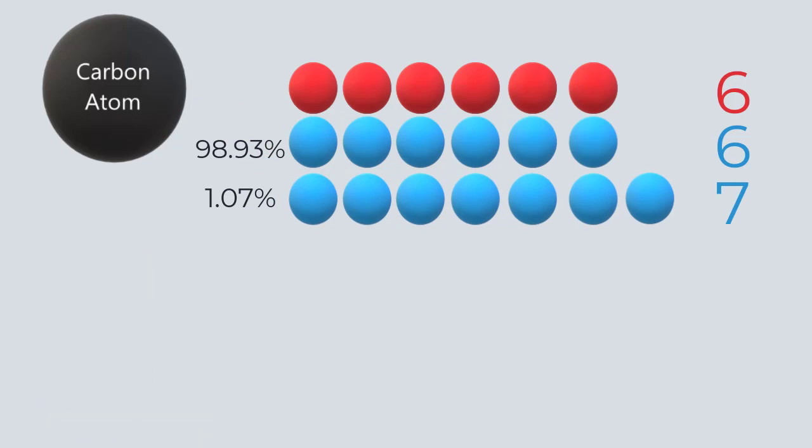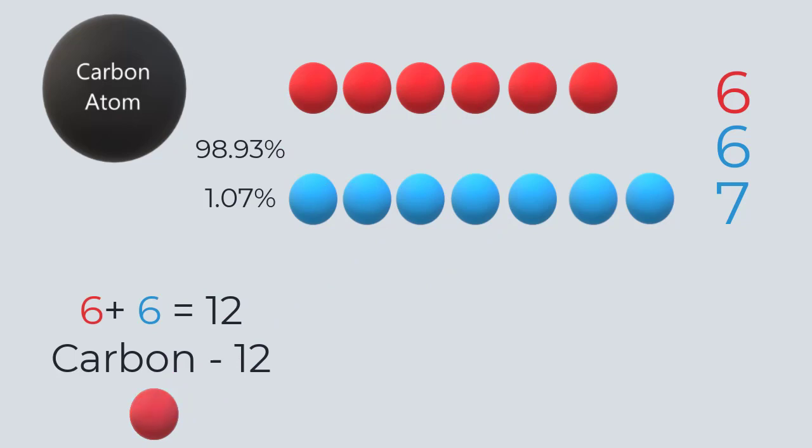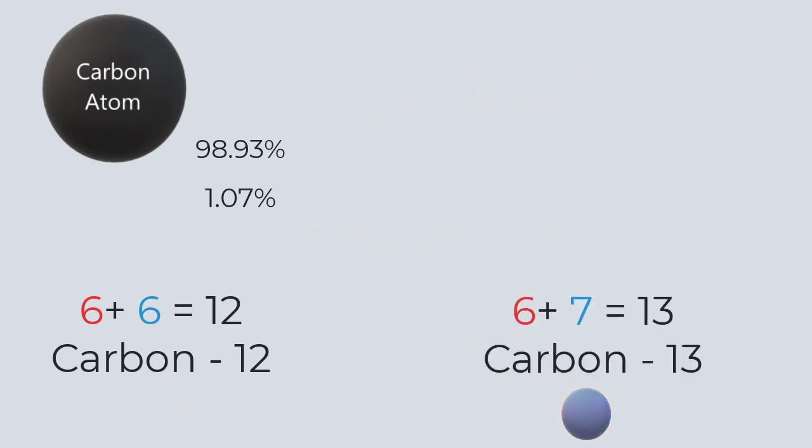By adding the number of protons and neutrons together, you get what is called the isotopic number. So the atom with 6 neutrons is a carbon-12 isotope, and the atom with 7 is carbon-13.